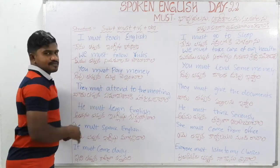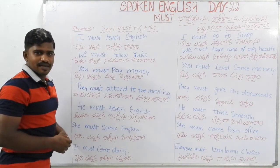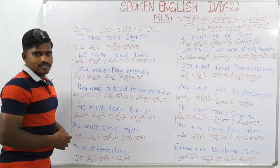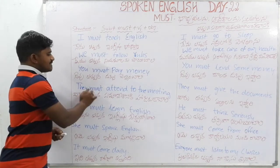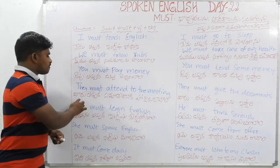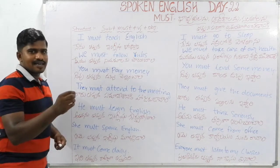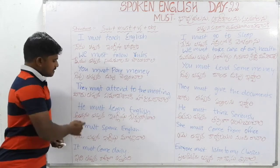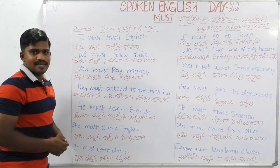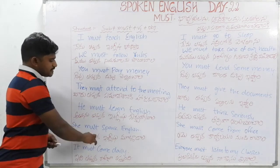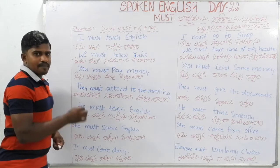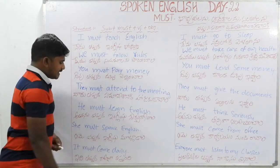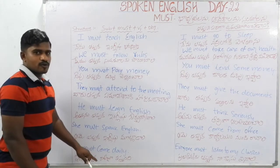Third example: you must pay money. They must attend the meeting. You must learn English. She must speak English. You must come daily. You must run daily. All of these use must followed by the V1 form.